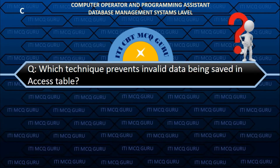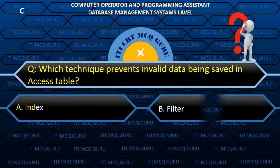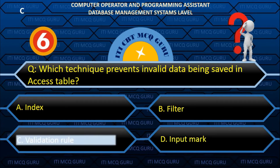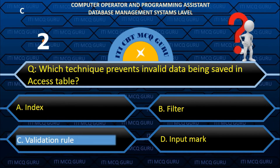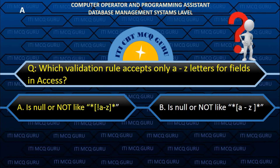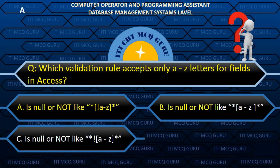Which technique prevents invalid data from being saved in Access? Validation Rule. Which validation rule accepts only A to Z letters for fields in Access? A. Is Null Or Not Like.